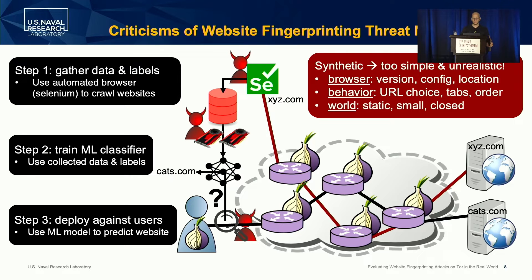This has also been shown in previous research. The browser that the adversary would use to crawl is pinned usually to a specific version or a specific configuration, or the crawl is conducted from a small set of locations geographically. The crawler doesn't reproduce the behavior that clients would in the real network. The choice of URLs to crawl, if they're using multiple tabs, the order that they're browsing pages — those are all choices made in a synthetic model. And then the world considered under this threat model is usually static, smaller than what we consider accessible in the real world, and is often closed in these evaluations. So nobody really knows if website fingerprinting is viable in the real world because it's never been done before.